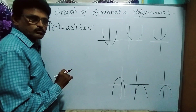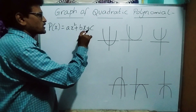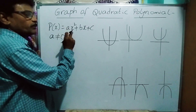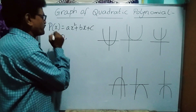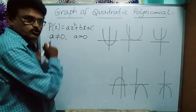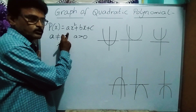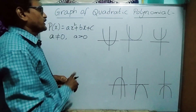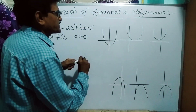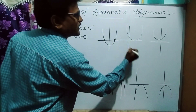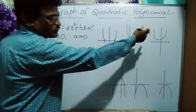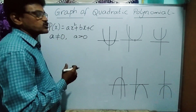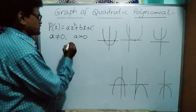The reason it varies is because the value of 'a' can be positive or negative. The condition for a quadratic polynomial is that 'a' must not equal zero. If 'a' is greater than zero — that is, if the x² coefficient is positive — then the parabola opens upward. In that case there are again three cases: touching x-axis at two places, at one place, or not at all. To determine which case applies, we use the discriminant formula.